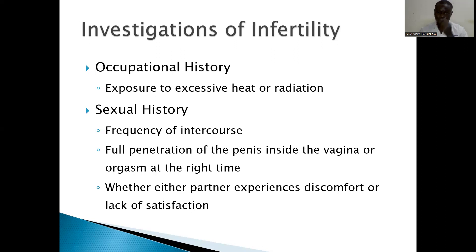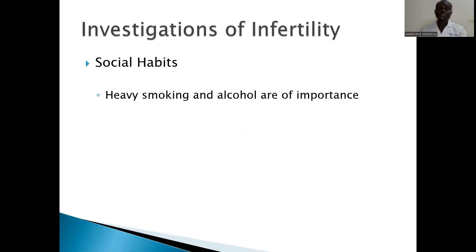We look at the sexual history — the frequency of intercourse. Sometimes people complain they are infertile, but the frequency of intercourse is quite low. With sexual history, we also look at full penetration of the penis inside the vagina, or orgasm at the right time. Some people ejaculate before the whole sexual act is complete, and they will fail to have a child because of that.